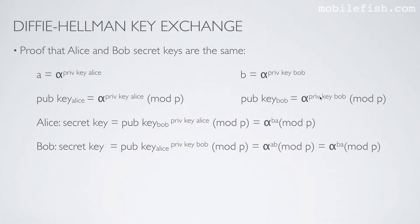If I replace this exponent with B, then you get alpha^B, and then the private key of Alice — that is A — I write A over here. If I do the same with Bob's secret key, this is Bob's secret key equation. Here is the public key of Alice, and this is the equation of the public key of Alice. If I replace this part with A, so alpha^A mod p, and then the private key of Bob — that is B.